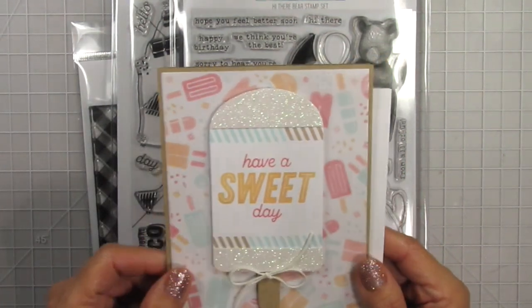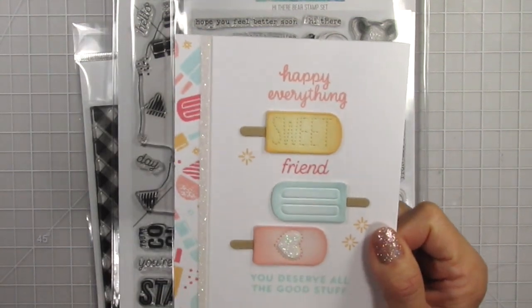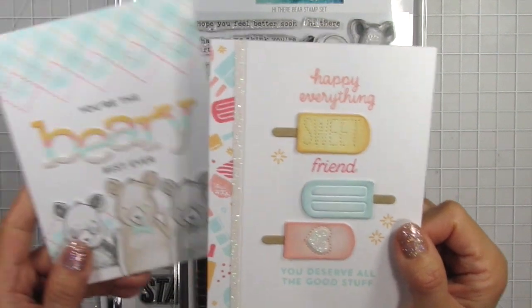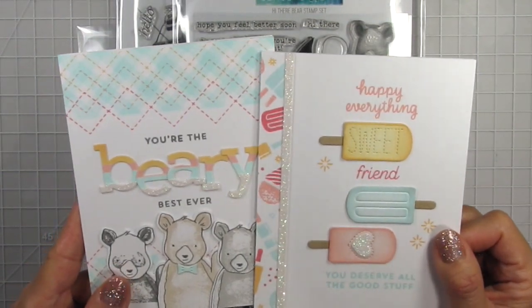I wanted to make more panda cards and I was curious if one of the small popsicle dies would be the right proportion in the panda's paw. I'm going to try and make a combination of these two cards using the same stamp sets.